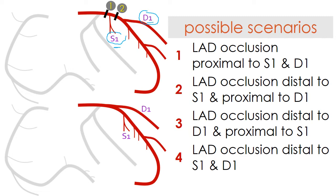Third, occlusions that are localized after the first diagonal branch and before the takeoff of the first septal branch, in patients that have a pattern of takeoff of the most proximal branches that is opposite to the one represented in the upper part of the figure. And finally, occlusions that are localized distal to both the first septal and the first diagonal branches.